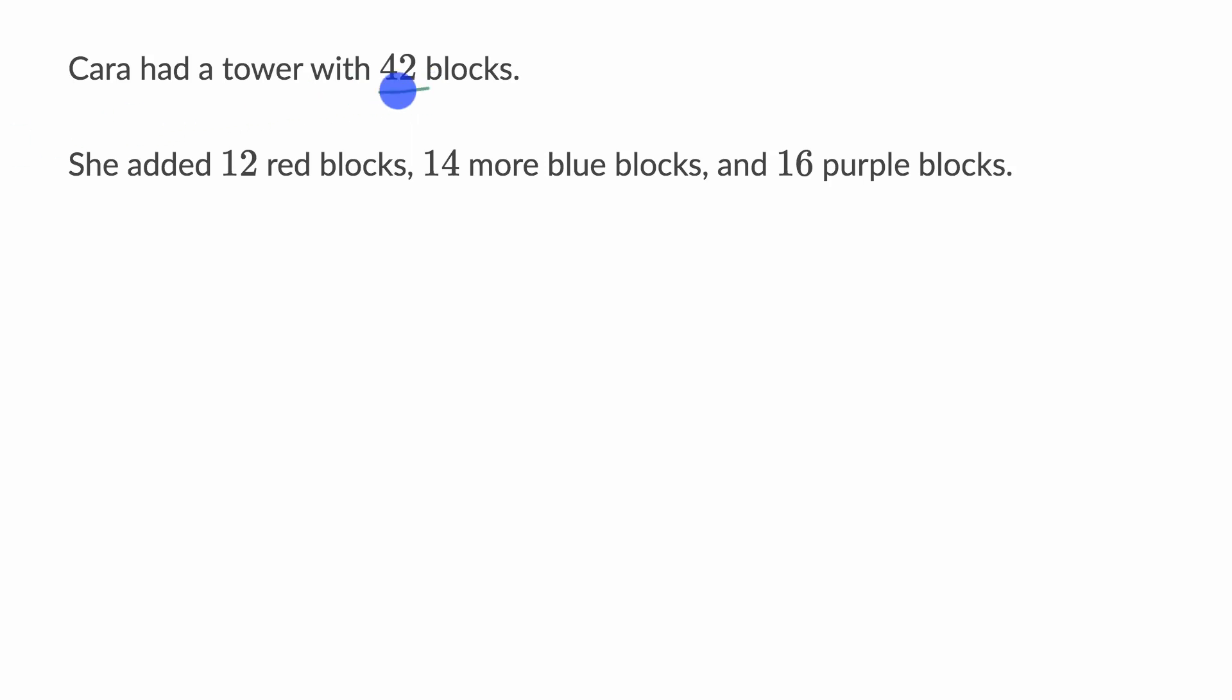We're told that Kara had a tower with 42 blocks. She added 12 red blocks, 14 more blue blocks, and 16 purple blocks. So what we want to do in this video is think about how many total blocks Kara now has.